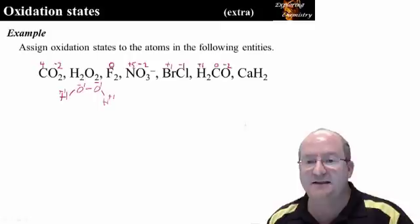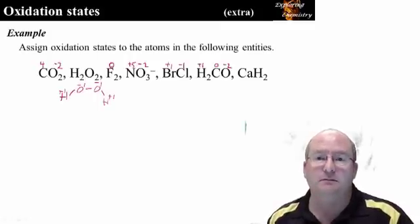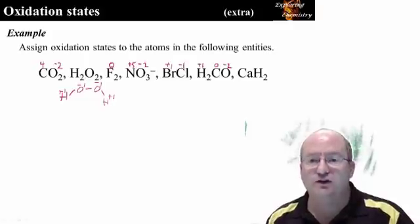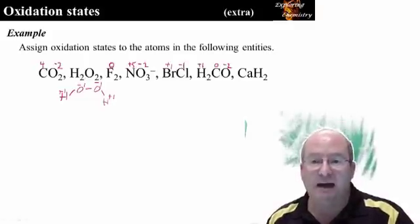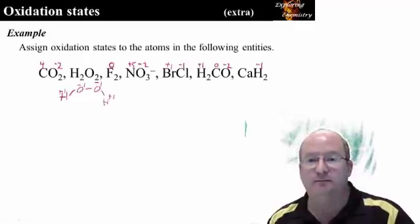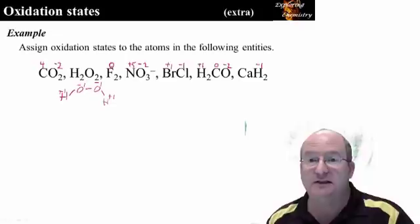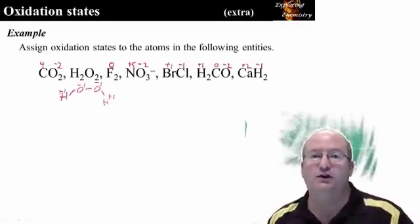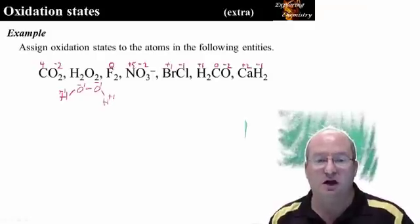And in this last example, calcium is a metal. Hydrogen, we have a rule for when it is bonded to a metal, it is minus one. And calcium, because it is group two, has a charge of plus two. This combined together gives it an overall charge of zero, which confirms our analysis.